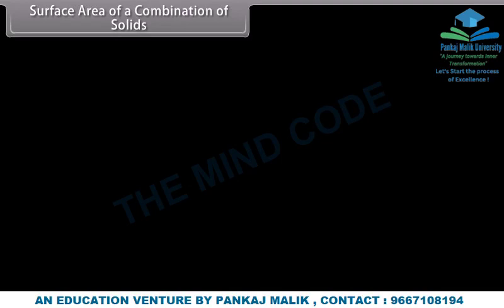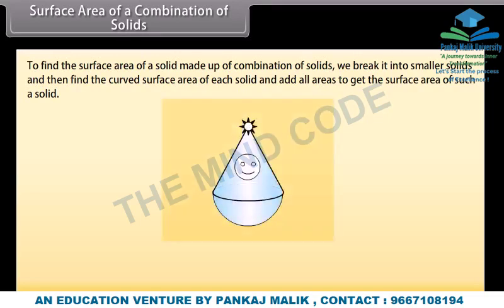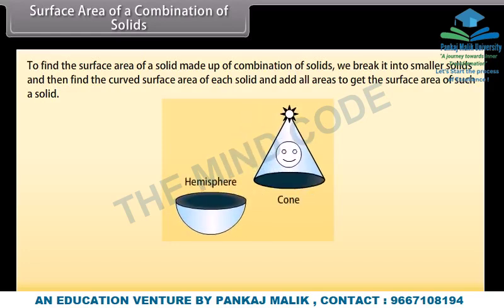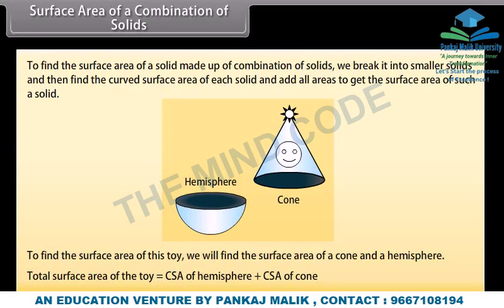Surface area of a combination of solids: To find the surface area of a solid made up of a combination of solids, we break it into smaller solids and then find the curved surface area of each solid and add all areas to get the surface area of such a solid. For example, look at this toy. This toy is a combination of a cone and a hemisphere. The total surface area of the toy equals the curved surface area of the hemisphere plus the curved surface area of the cone.